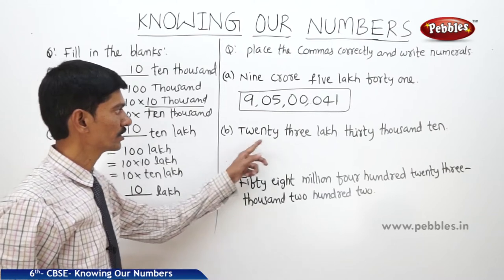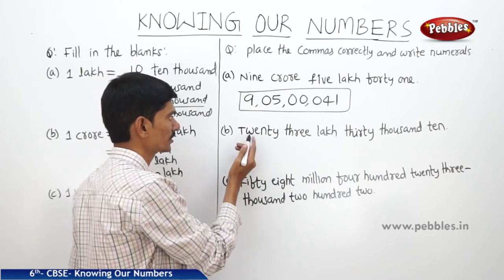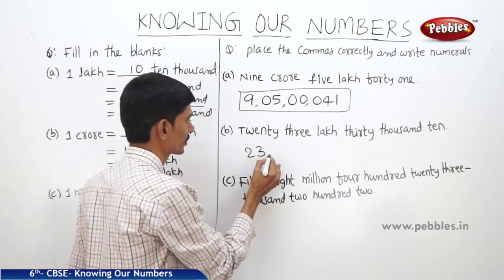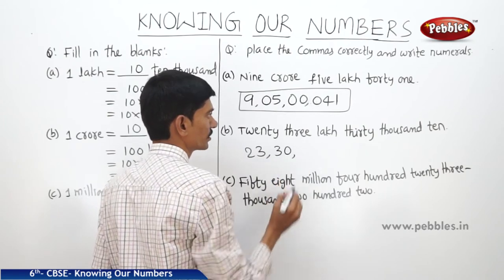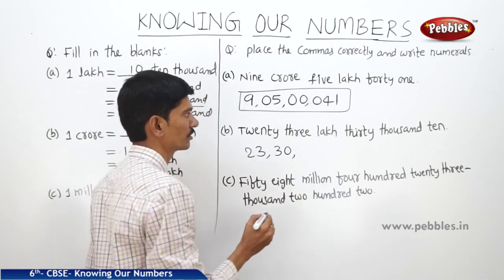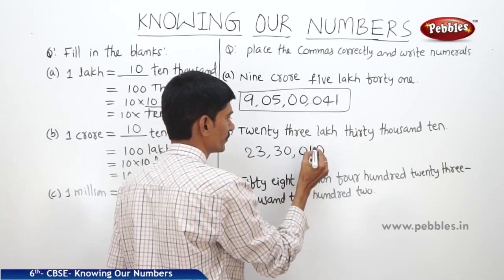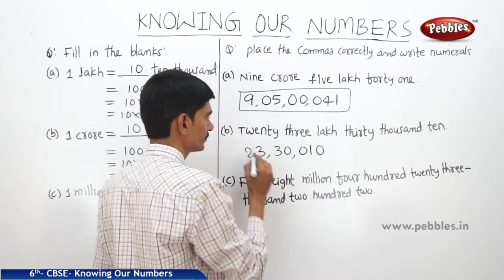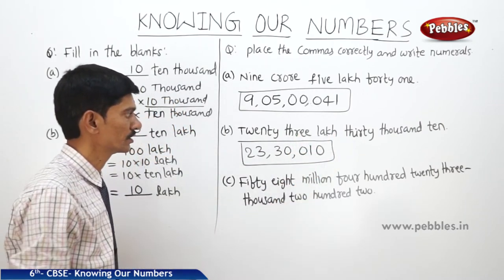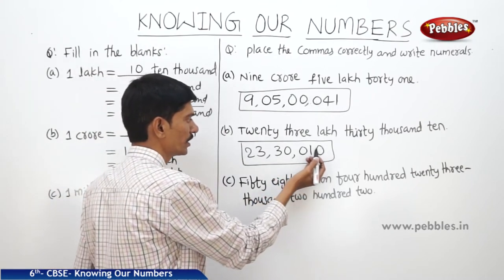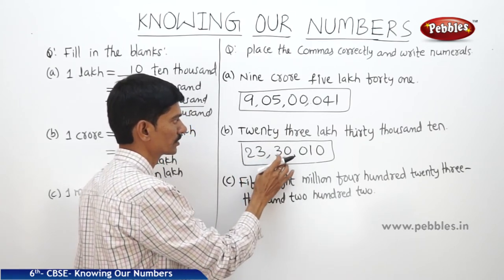The next one is 23,300,000. Writing it out: 3, 0, 30,000, then the 100s place is not given so we write 0, then 10s place is 1, 1s place is 0. We use commas according to the Indian system of numeration — after 3 digits from right, then after 2 digits. This number is read as 2,33,00,000.